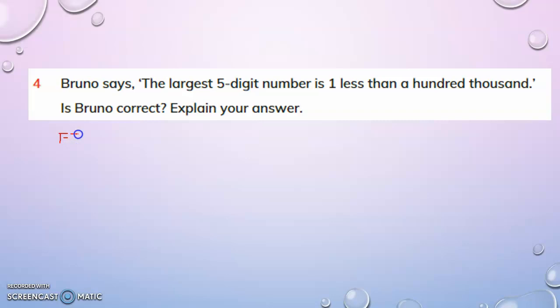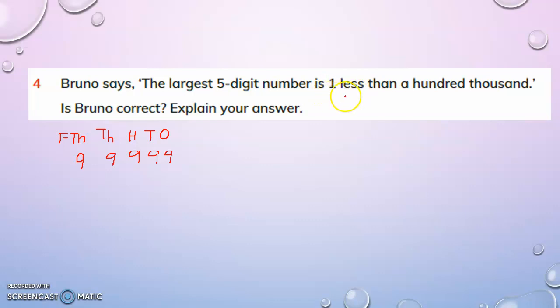We'll start with writing the largest five-digit number: ten thousands, thousands, hundreds, tens, and ones. This is a five-digit number. So the largest five-digit number is ninety-nine thousand nine hundred and ninety-nine. Now the smallest six-digit number is obtained by adding one to the largest five-digit number, or if we subtract one from the smallest six-digit number we get the largest five-digit number.